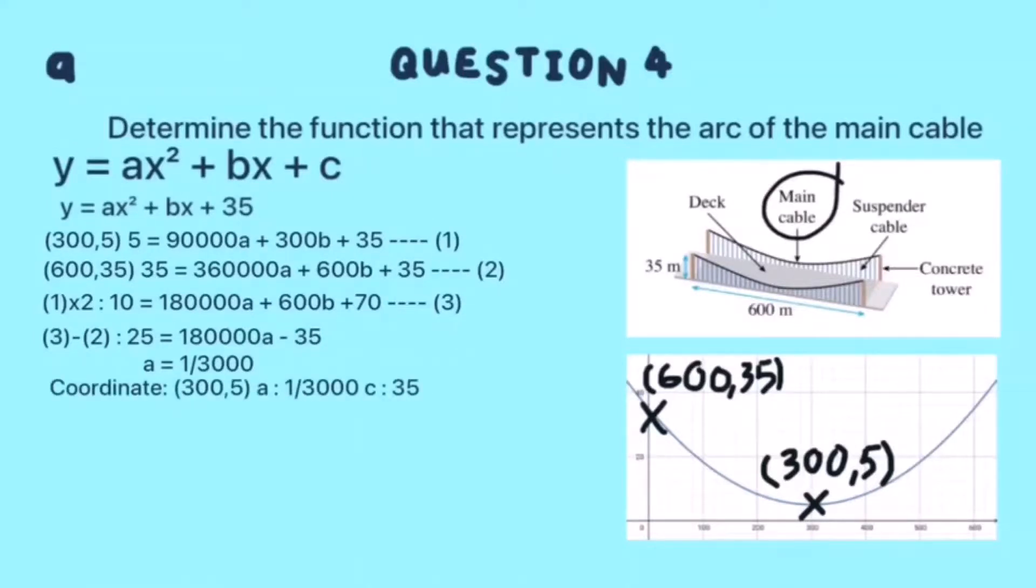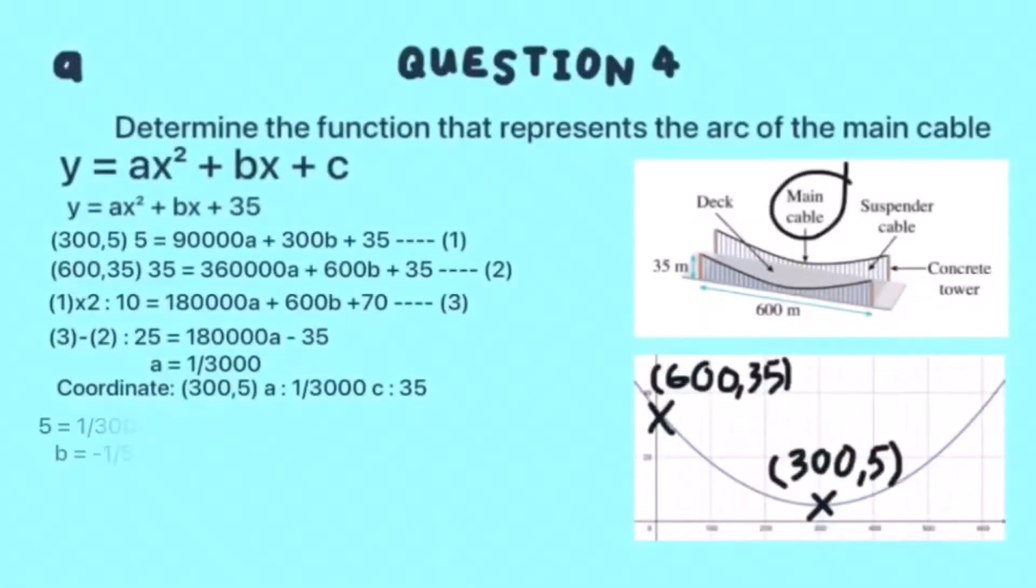Third, to find the value of b, take the value of a, c, and any coordinate, and then substitute them into the function. We will get b equal to negative 1/5.